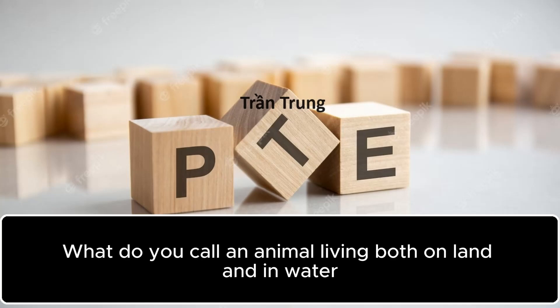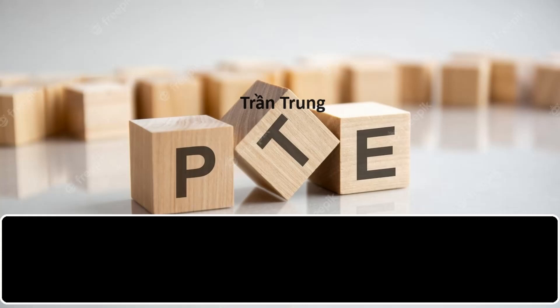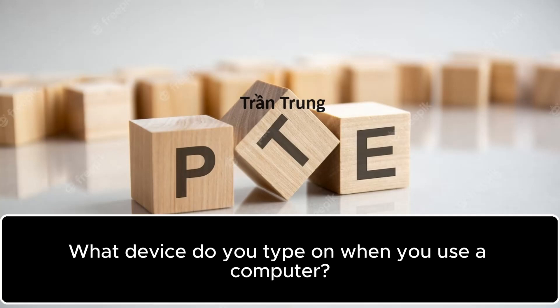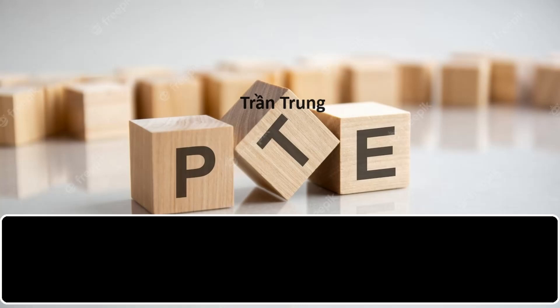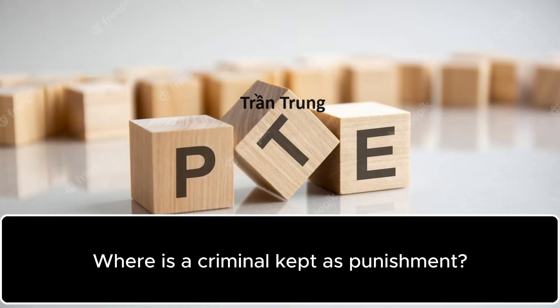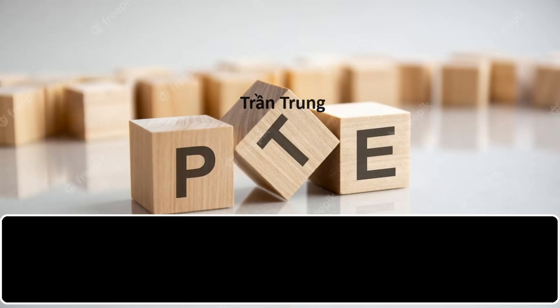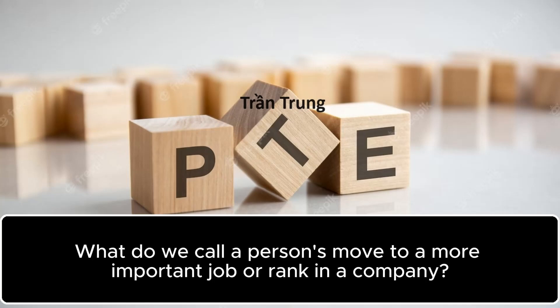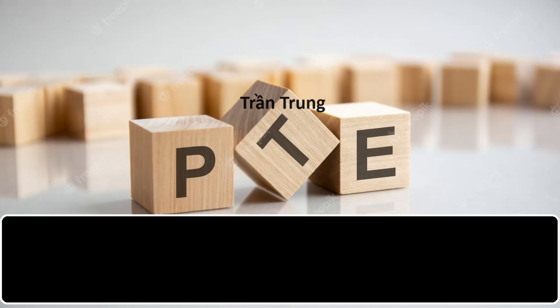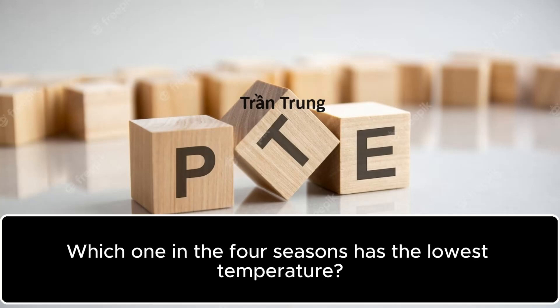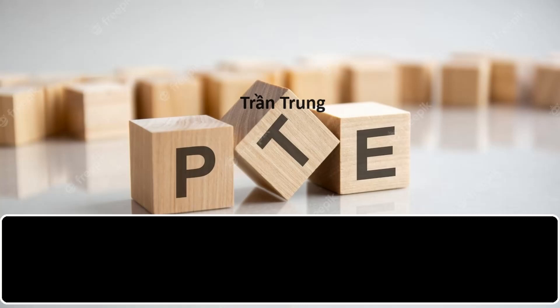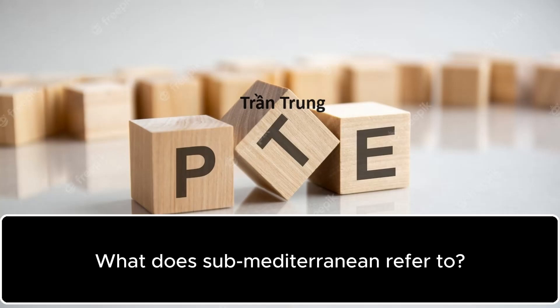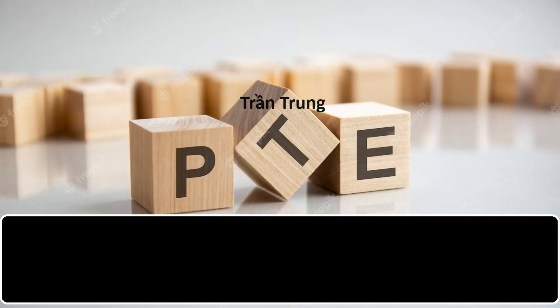What do you call an animal living both on land and in water? Amphibian. What device do you type on when you use a computer? Keyboard. Where is a criminal kept as punishment? Prison. What do we call a person's move to a more important job or rank in a company? Promotion. Which one in the four seasons has the lowest temperature? Winter. What does sub-Mediterranean refer to? Climate.